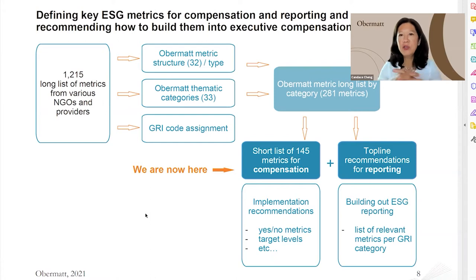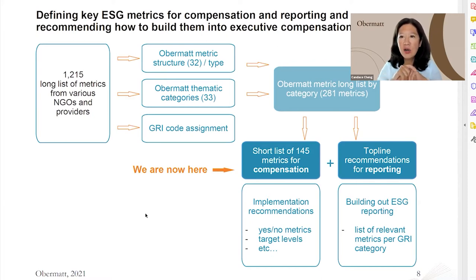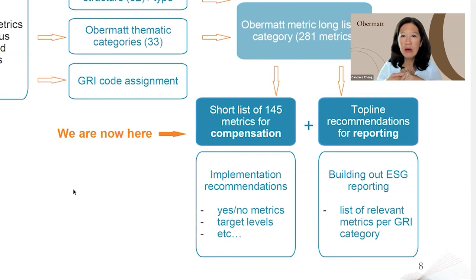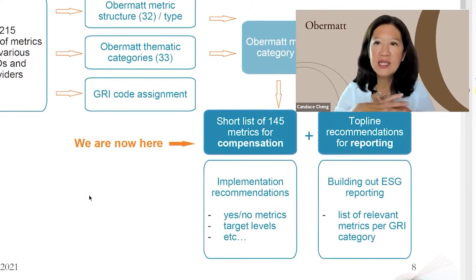In looking through the 1,200 we came to a long list of almost 300 metrics. We got from 1,200 to 300 by eliminating duplication — as you can imagine a lot of different providers are looking at similar topics — and removing certain things that are less relevant from a compensation or reporting perspective. From that 280 we then narrowed down to about 150 metrics that we would still recommend for you to consider from a compensation and reporting perspective.